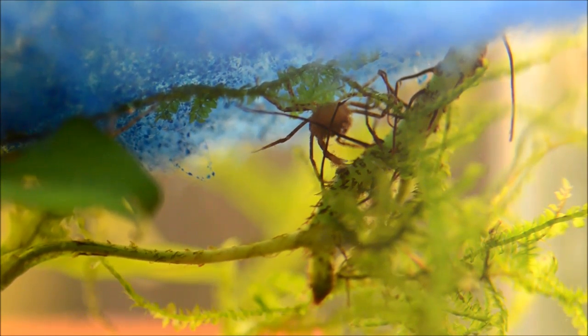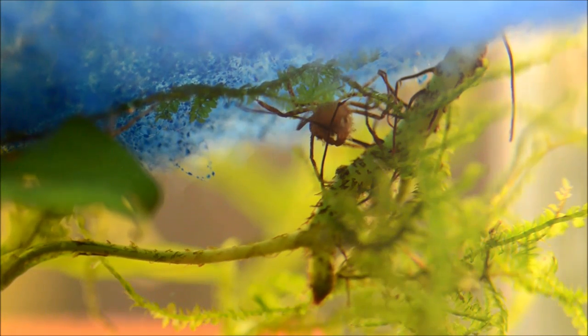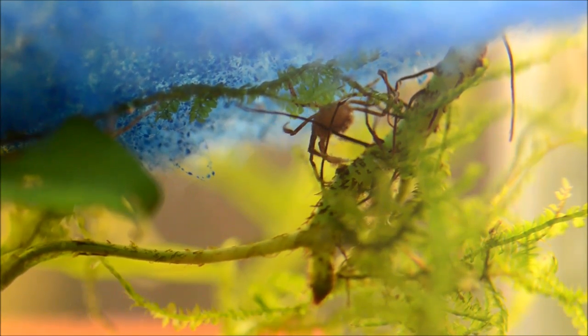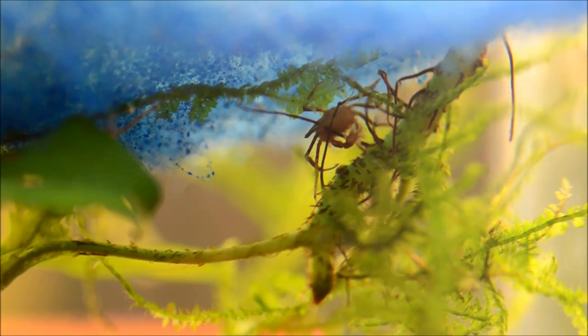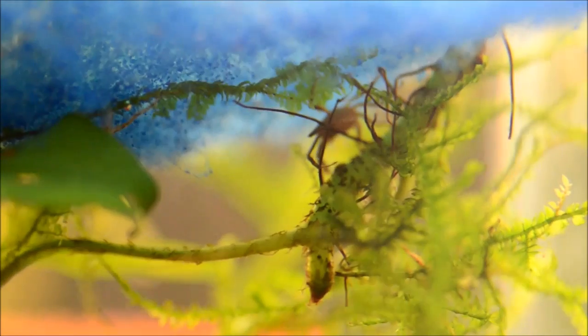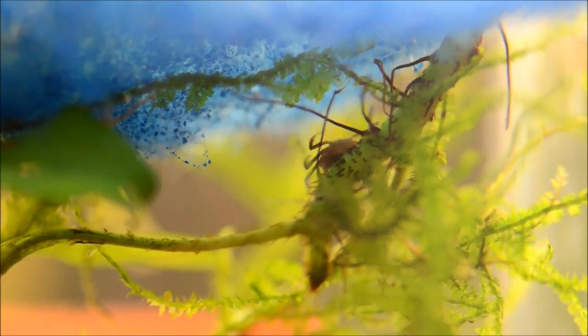You can see those dense, dense bristles. Anecdotally, it seems as though the females have denser bristles and get larger than the males. But you can see that crab just waving its claw around for food. There's actually two of them there.